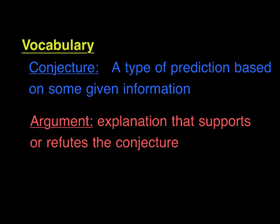A couple of the things that you're going to do is you are going to come up with a conjecture. A conjecture is a type of prediction based on some given information. So from that in and out box, you're going to come up with some conjectures for the rule, which means you're basically going to take a guess as to what you think the rule is.